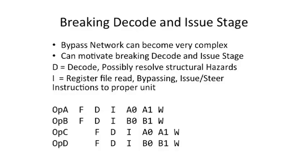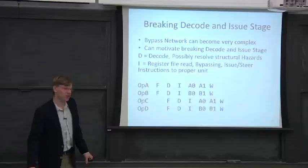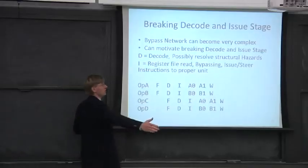So one thing that people do a lot to handle this bypassing from a critical path perspective, because this takes a long time or starts to take a long time, is you start to break the decode and the issue. So we're going to get away from our five stage pipes now. Up until this point, we've been doing the things that you've seen in the first Patterson and Hennessy book. And now we're going to start thinking about things that have longer pipelines.